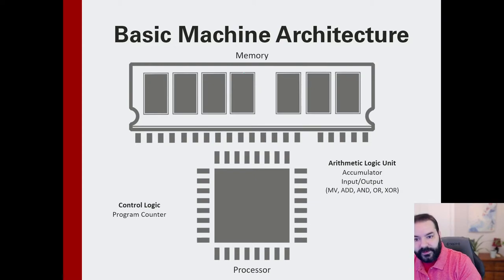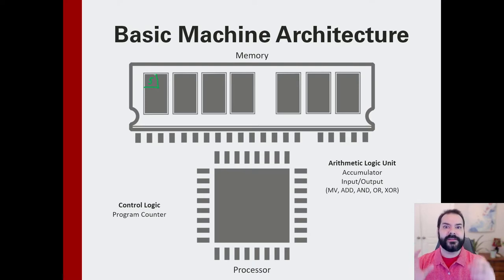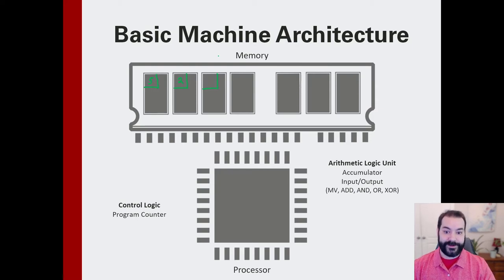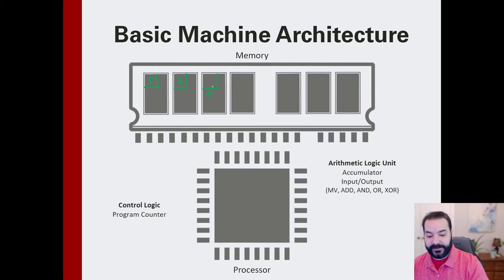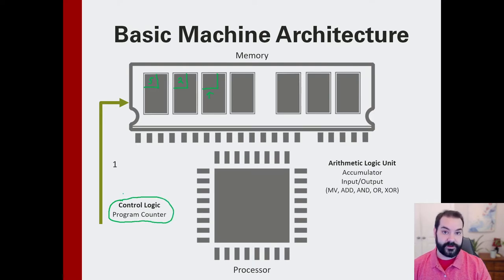The way to think about it: memory is storing information — say I'm storing a 5 in one slot and a 2 in another. My processor is going to want to do something to that 5, like get the value of 5 times 2. The processor has a part called the control logic. Inside the processor, my central processing unit goes up into memory and grabs the first instruction — it was 5 — then passes it into something known as the arithmetic logic unit, or ALU.